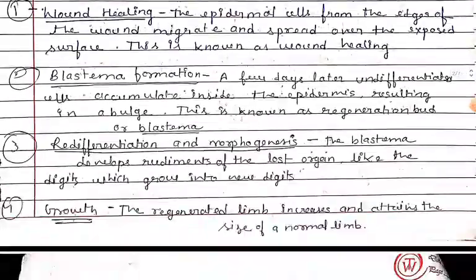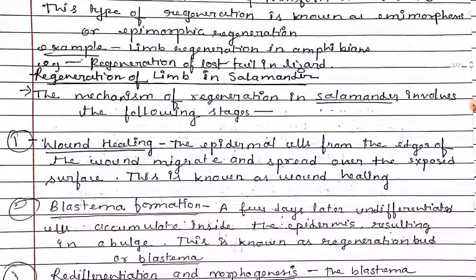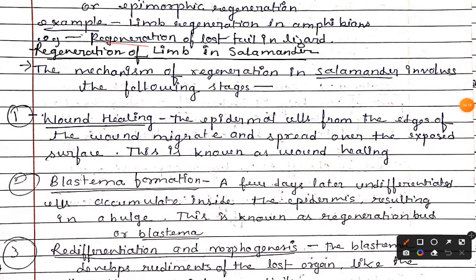An example of epimorphic regeneration is seen in the tail of the lizard. When threatened by an enemy, the lizard detaches its tail and the tail is later regenerated. This is epimorphic regeneration. Similarly, limb development in salamanders and amphibians is also the same type of epimorphic regeneration.